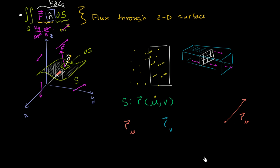Now let's go back to this point and make v a little bit bigger. If we make v a little bit bigger, we go to another point on the surface, and r_v would point in that direction. Its direction is also tangential to the surface — we're going from one point on the surface to another as we change v. These two vectors, r_u and r_v, are not necessarily perpendicular to each other.